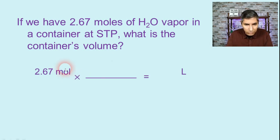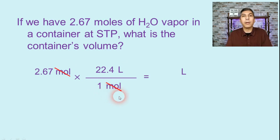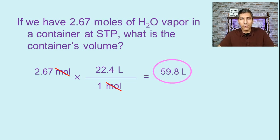In our conversion factor, since we're starting with moles, I'm going to put moles on the denominator so it'll cancel. Since we're converting to liters, I need liters on the top. We know that there are 22.4 liters in one mole of gas at STP. Now I can cancel moles top and bottom. On my calculator, I'll take 2.67 times 22.4, and I find that the answer is about 59.8 liters. That's the volume of this amount of water vapor.